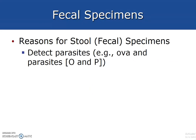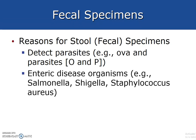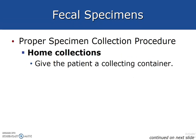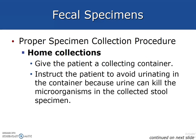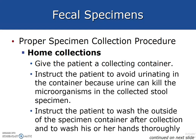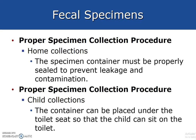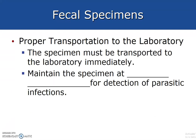Reasons for stool specimens include detecting parasites, ova and parasites, enteric disease organisms such as Salmonella, Shigella, Staph aureus, viruses, and also occult blood. This is done by home collections. Instruct the patient to avoid urinating into the container because urine can kill microorganisms in the stool specimen, and instruct the patient to wash the outside of the container after collection. Home collections must be promptly sealed to prevent leakage and contamination. The specimen must be transferred to the laboratory immediately and maintained at room temperature or body temperature for detection of parasitic infections.